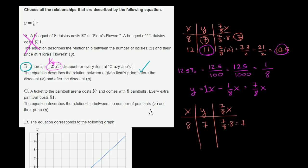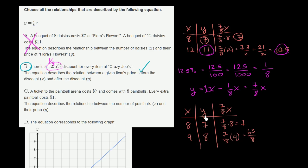Now let's get another data point. Every extra paintball costs $1, so if we have 9 paintballs, we pay one more dollar — $8. What's 7 eighths times 9? That's 63 over 8. Since 64 over 8 would be 8, this is a little less than 8. The key point is that 8 is not equal to 63 over 8. So y does not equal 7 eighths x here — this equation does not describe all the data points. We can rule that out.